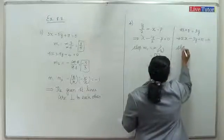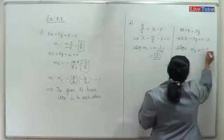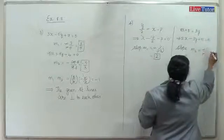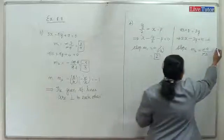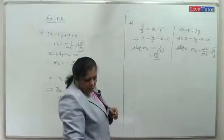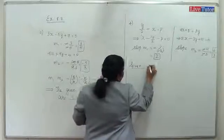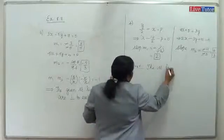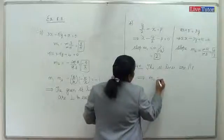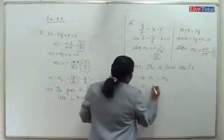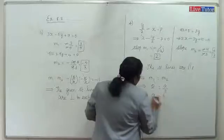Slope m2 from Ax minus 3y plus 5 equals 0: m2 equals minus A by minus 3, which equals A by 3. Since the lines are parallel, m1 equals m2: 2 equals A by 3, which gives A equals 6.